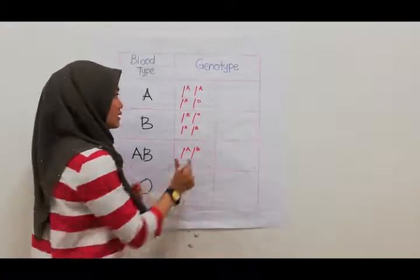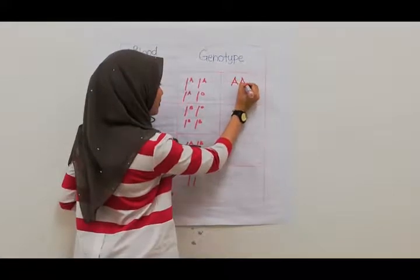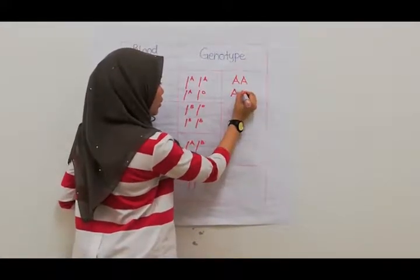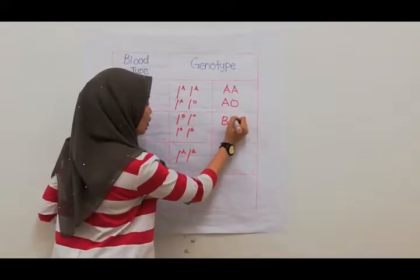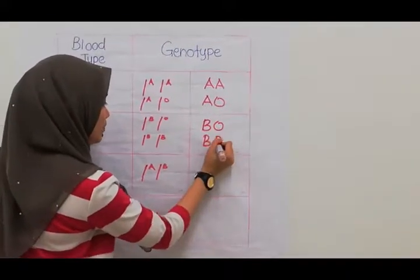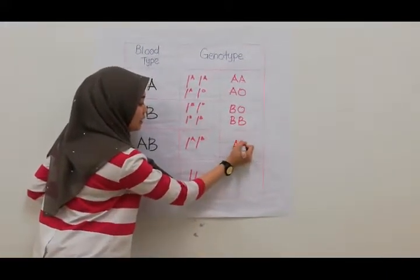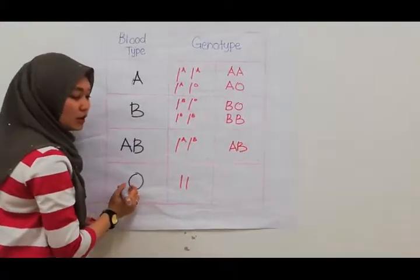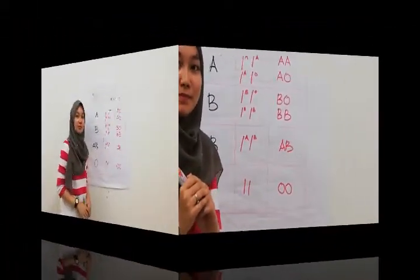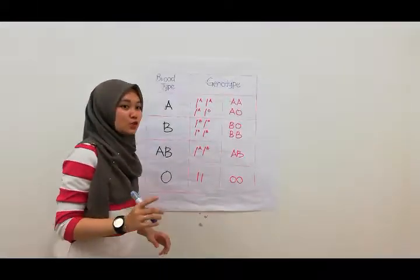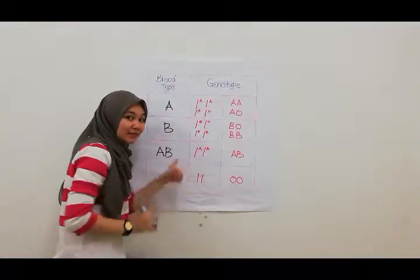There will be six different genotypes at human ABO genetic locus. So how to write it based on these alleles? It's going to be AA or AO. Next, for blood type B, it's going to be BO or BB. For blood type AB, it's going to be AB. And for blood type O, it's going to be OO. So it is important for us to know how to write the allele for each blood type, okay? Good luck!